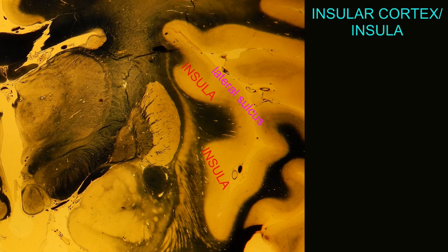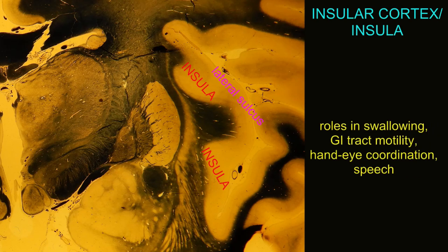The insula also has regions with roles in motor functioning, such as swallowing, the motility of the muscle along the GI tract, and the coordination of movements with the hands and eyes. It is also involved in speech — not the primary center for speech, but nevertheless with roles in the muscular movements of speech.